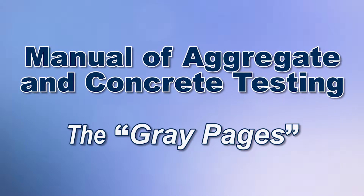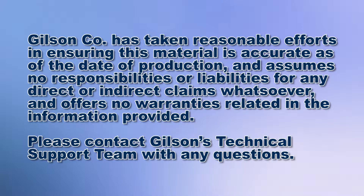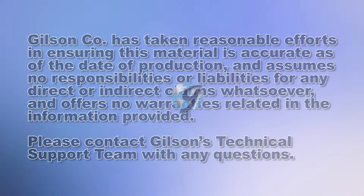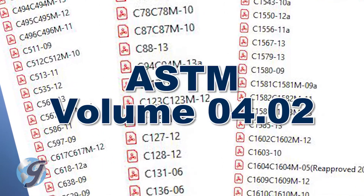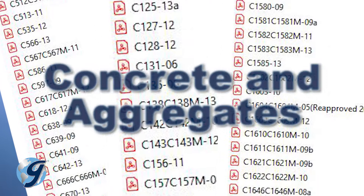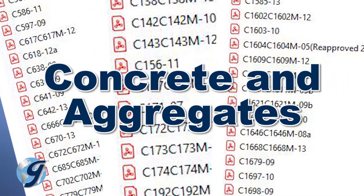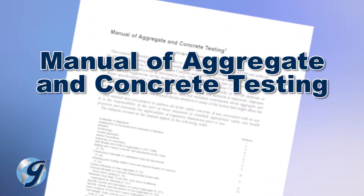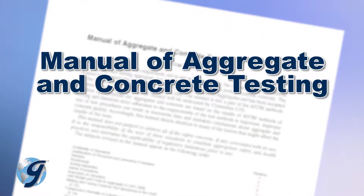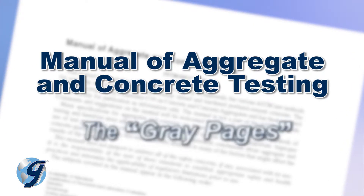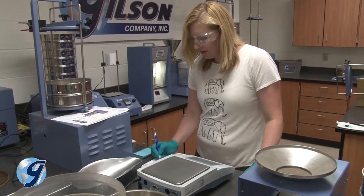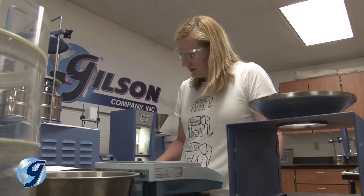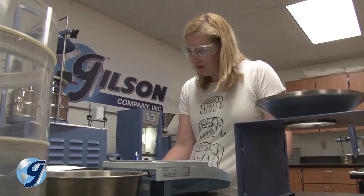It's an open secret that one of the most valuable references available for construction material testing labs has long been included with every copy of ASTM Volume 4.02 Concrete and Aggregate Testing. The Manual of Aggregate and Concrete Testing, or as it's commonly called the Gray Pages, is a user-friendly ASTM guide to performing concrete and aggregate tests efficiently while conforming to the test specifications.